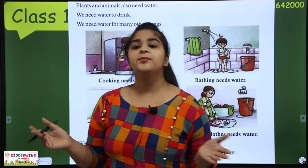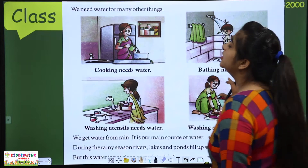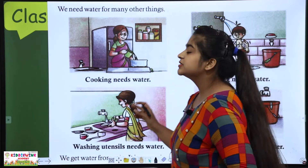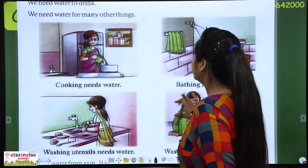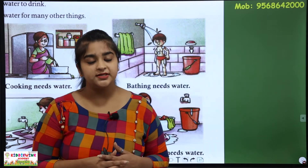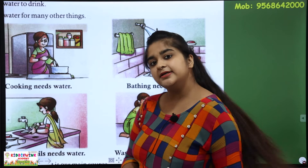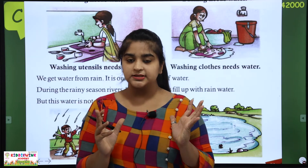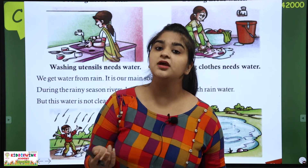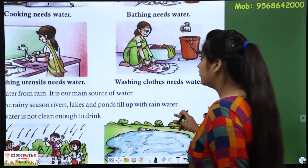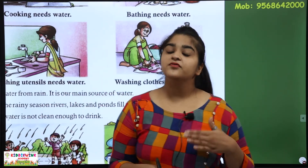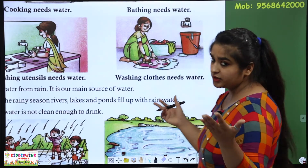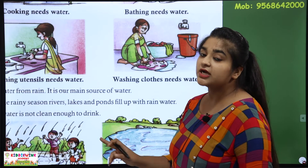We need water for many other things. Water is used for bathing — you need water. Washing utensils needs water — you can't eat from one utensil again and again without washing. So what do you need to wash? Water. Washing clothes also needs water. We need to wash clothes daily for cleanliness. And how will it be done without water? So we use water for washing clothes.